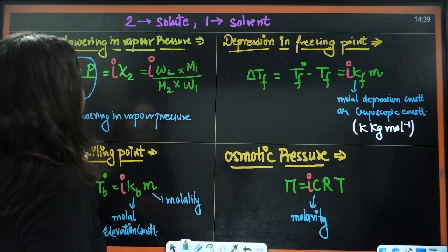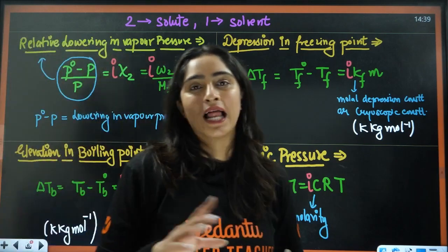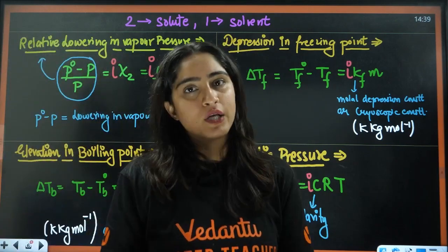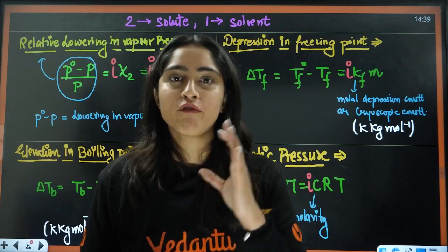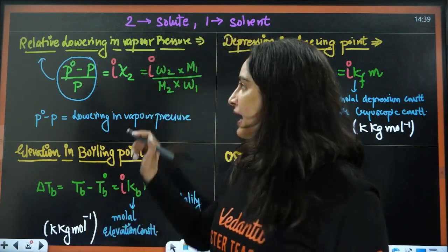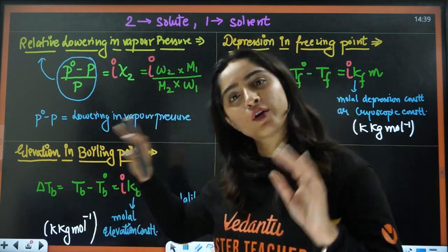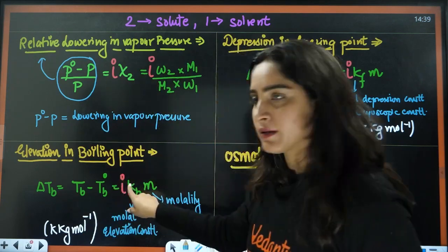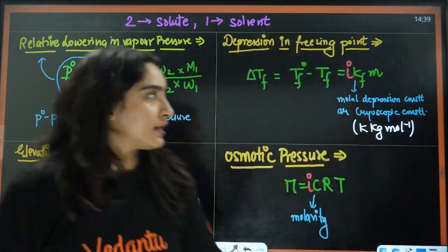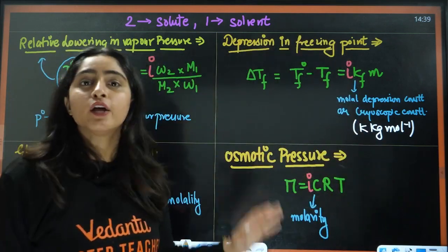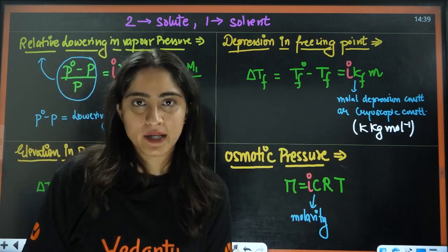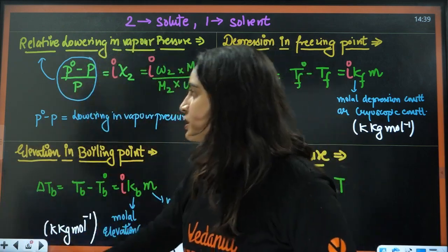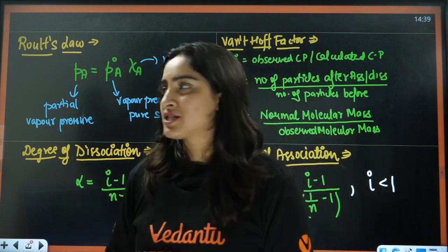Next, if there is any dissociation or association, there will be a Van't Hoff factor. So just apply the Van't Hoff factor i in all the formulas. I will be added here, here, and here — in all the colligative properties. Because of association and dissociation, there will be some change.